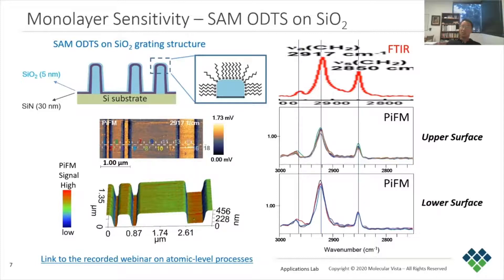When we image the sample using the CH stretching mode at 2917 wavenumber, we see consistently stronger signal at the lower surfaces compared to the upper surfaces. When 18 spectra are taken across the structure, we can see good repeatability in the spectra within the upper and lower surfaces. As observed in the PIFM image at 2917 wavenumber, the spectra taken in the lower surface show a much higher peak at 2917 wavenumber compared to the spectra from the upper surfaces, indicating a denser packing in the lower surfaces. We attribute this difference in SAM packing density to the different nature of silicon oxide in the upper and lower surfaces.